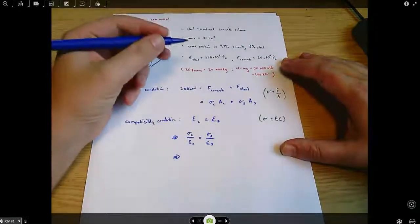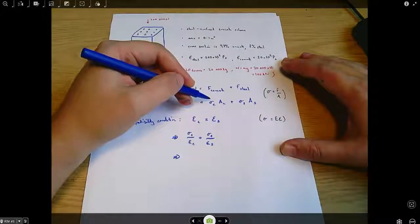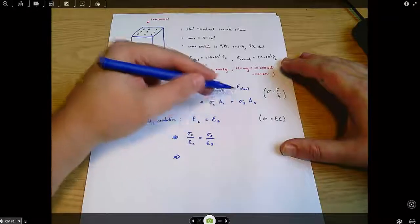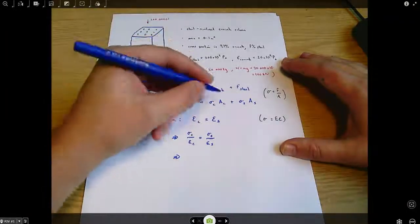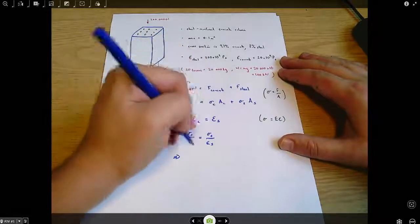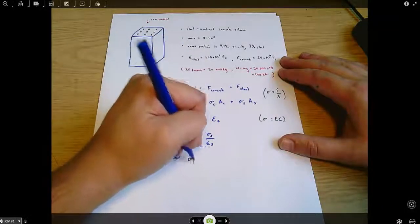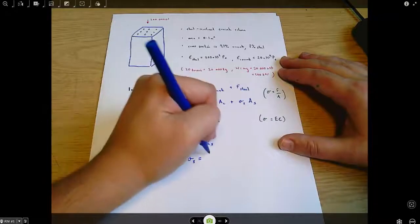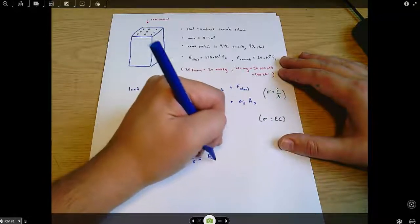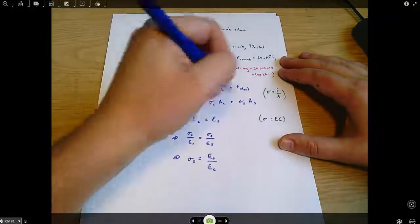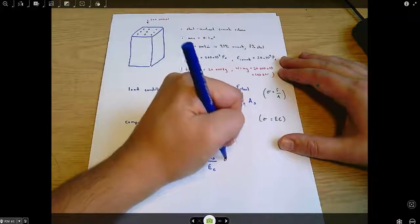And what I can do now is to substitute for the stress in the steel in this equation, and then we'll only have one unknown, and then we'll be able to solve. So if I say the stress in the steel equals the Young's modulus of steel divided by the Young's modulus of concrete, all multiplied by the stress in the concrete.